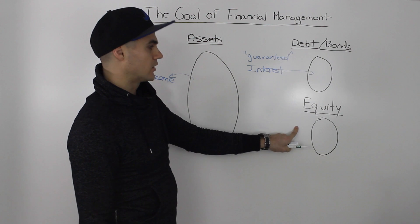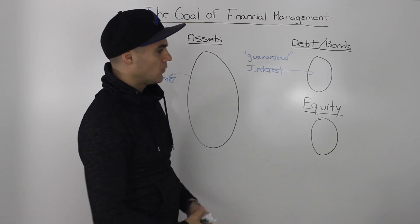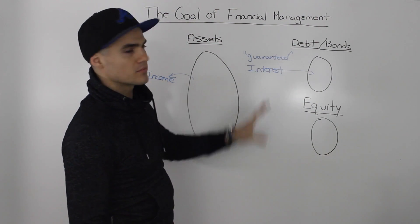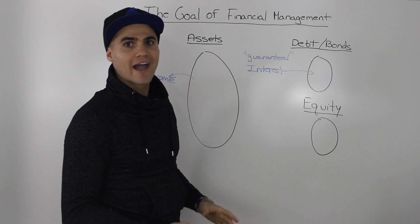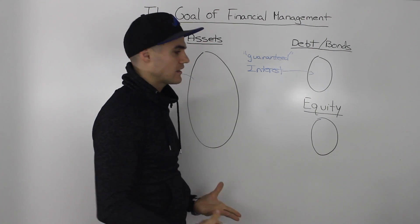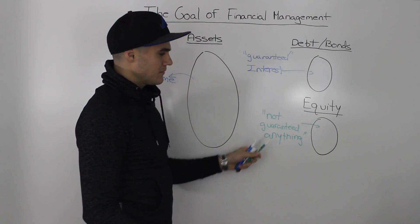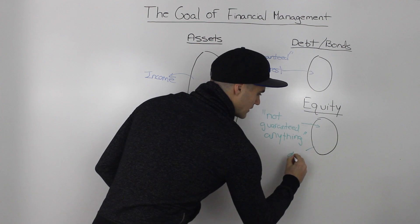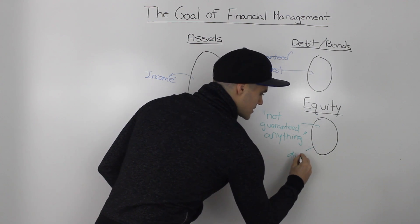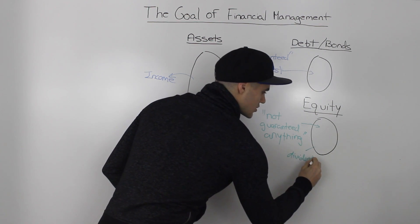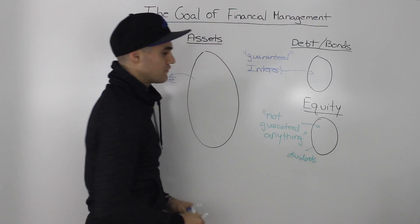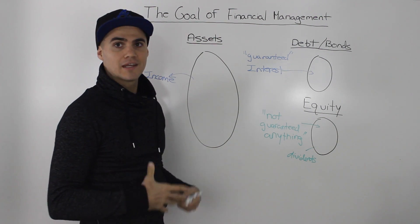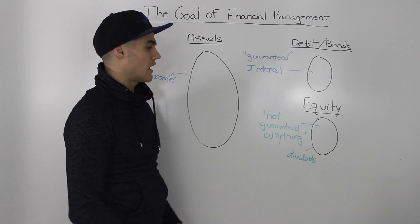Now what about the equity holders? The equity holders, in contrast to the bondholders, are actually not guaranteed anything. They may get some dividends, but this can change. And if they're not paid, unlike bondholders, there won't be any bankruptcy filed.